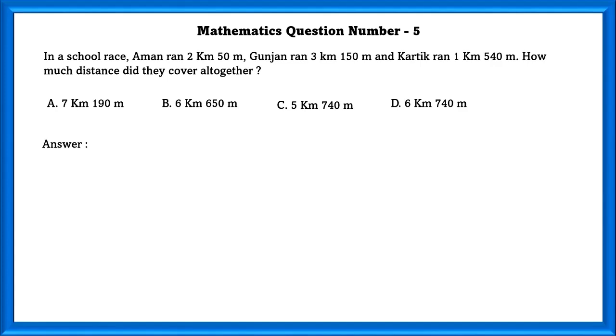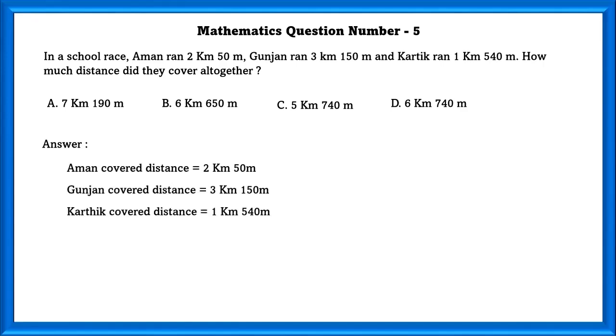Mathematics Question Number 5: In a school race, Aman ran 2 kilometers 50 meters. Gonjan ran 3 kilometers 150 meters. And Karthik ran 1 kilometer 540 meters. How much distance did they cover all together? In order to find how much distance they covered all together, we have to add distance covered by Aman, Gonjan and Karthik.